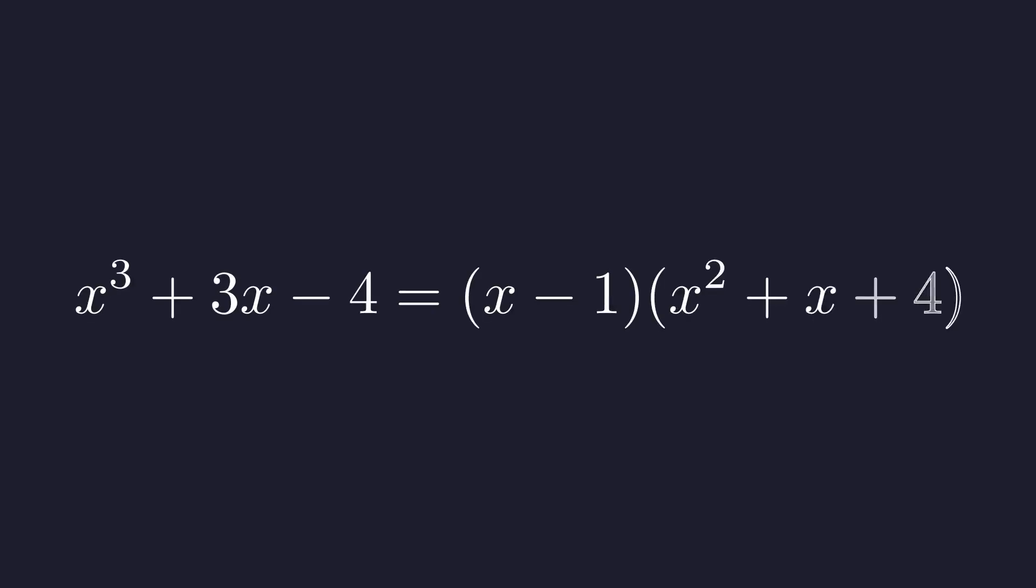So we've factored our cubic. It's x minus 1 times the quadratic x squared plus x plus 4. Now, could this quadratic give us any other real solutions? Let's check the discriminant.